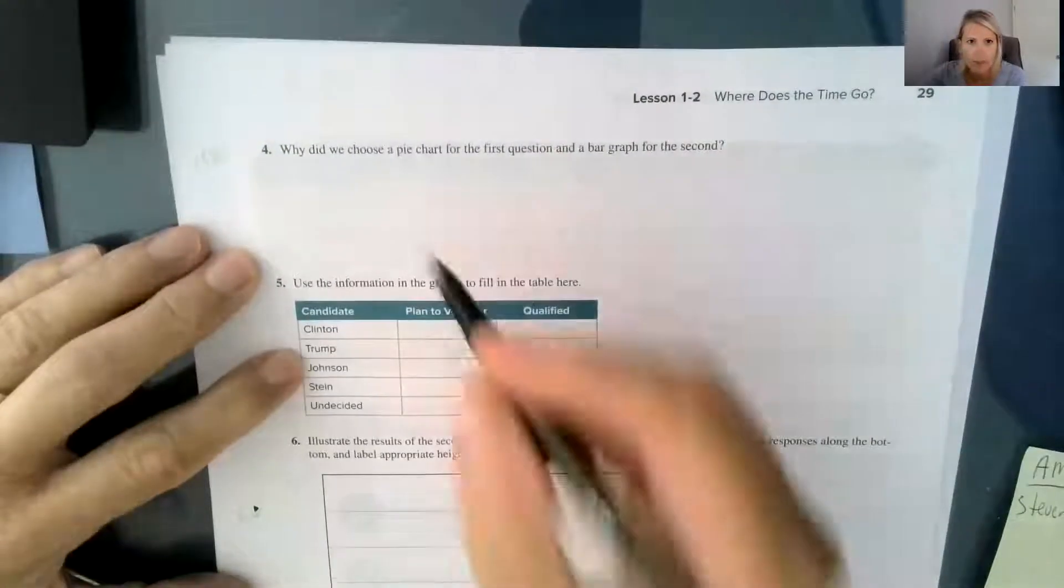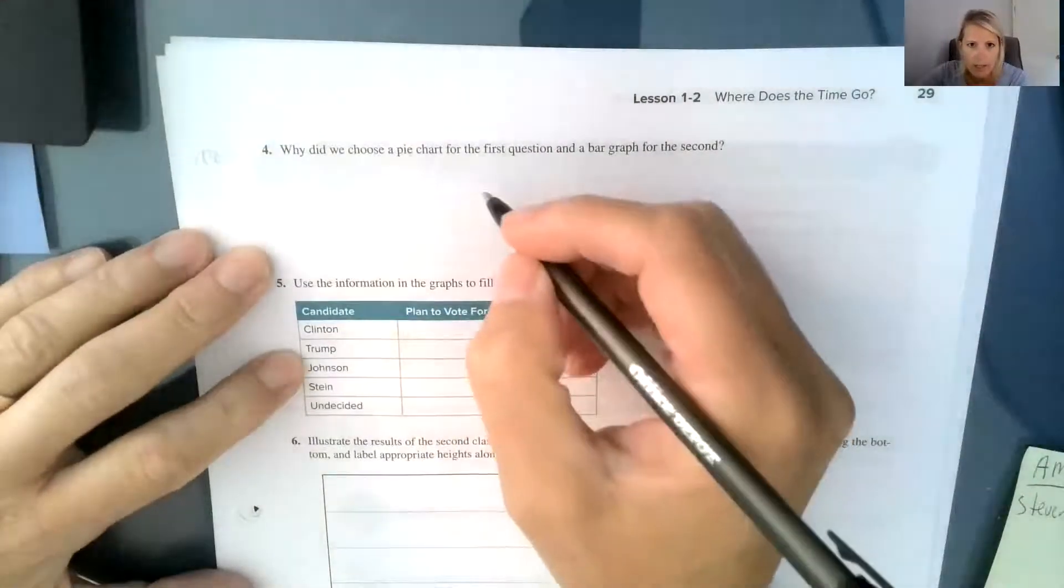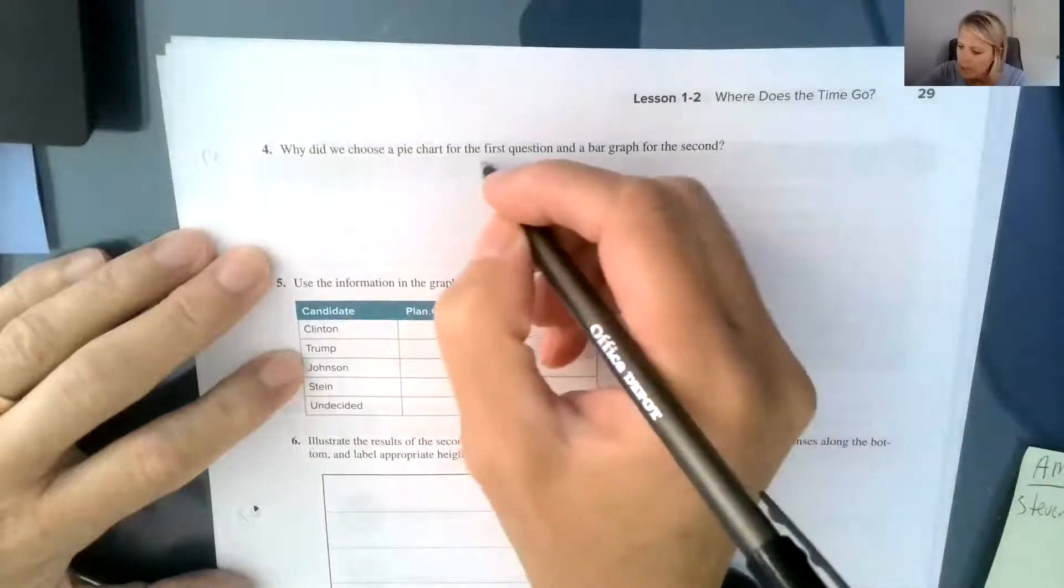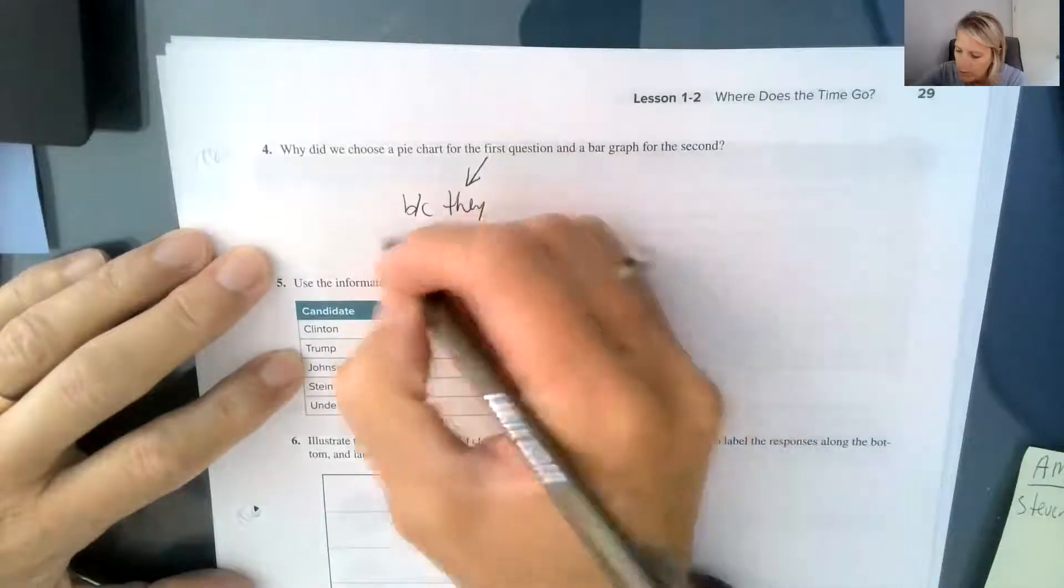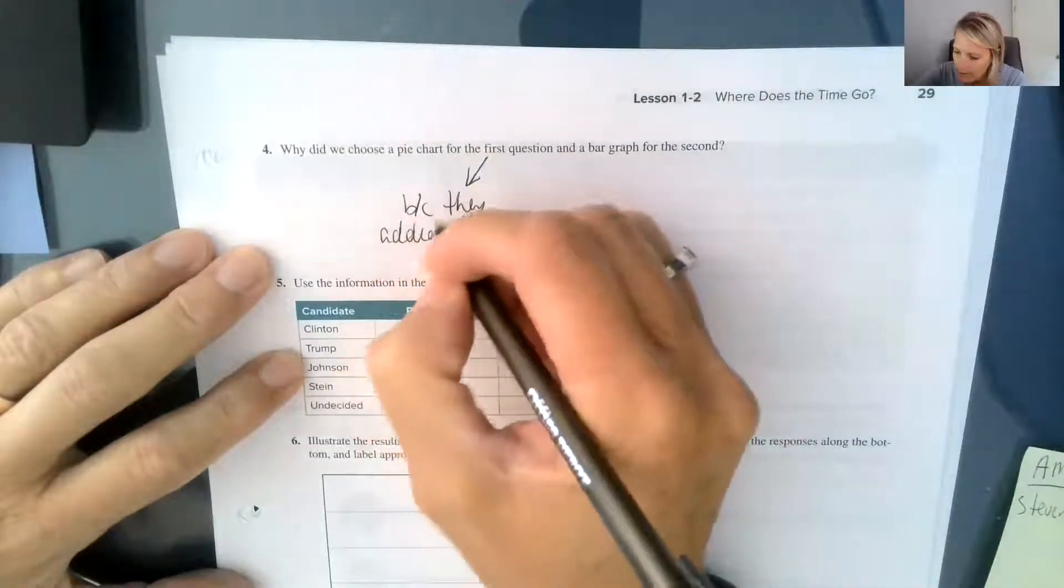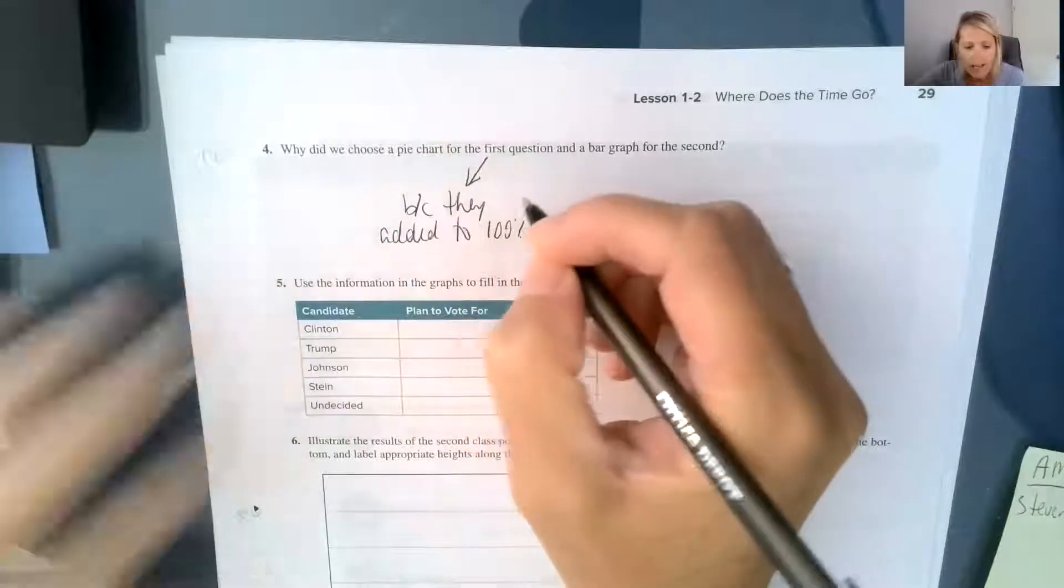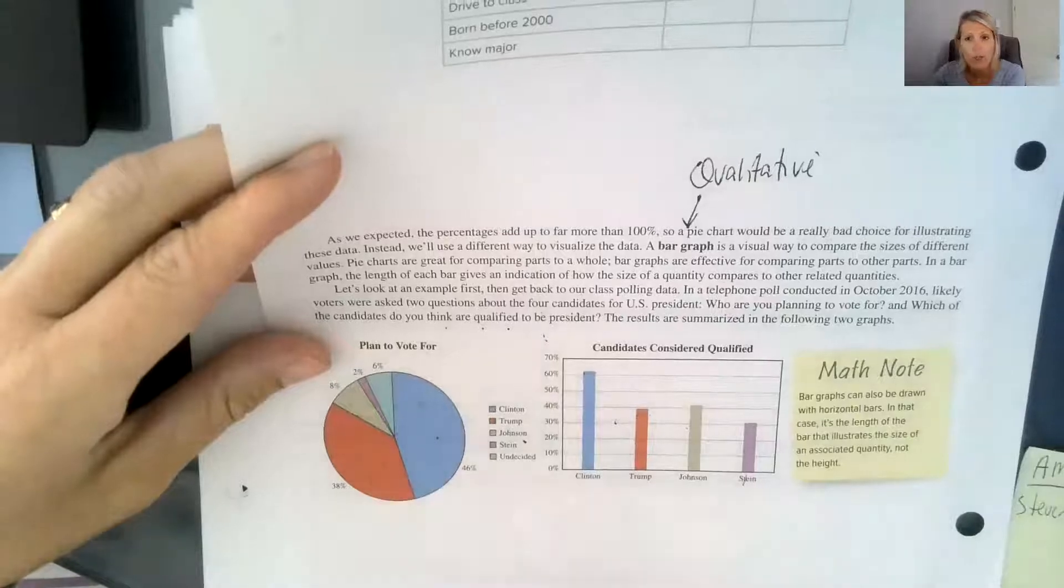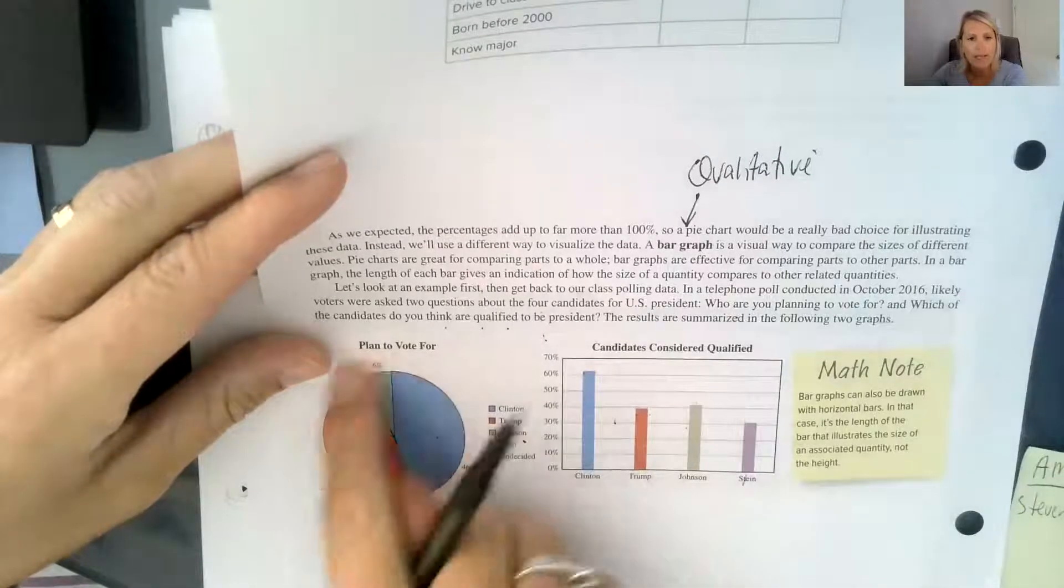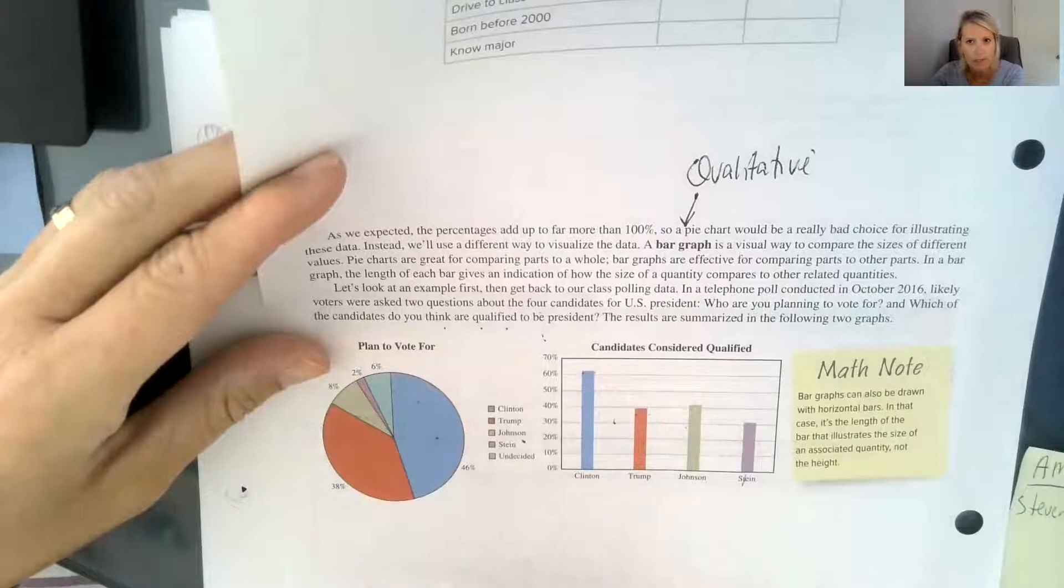And so it says, why did we choose a pie chart for the first question and a bar graph for the second? So the pie graph is because they added to 100%. And not just because they added to 100%, because each person when they asked the question, who are they going to vote for, they could only choose one. So everybody's answer only goes into this one time.